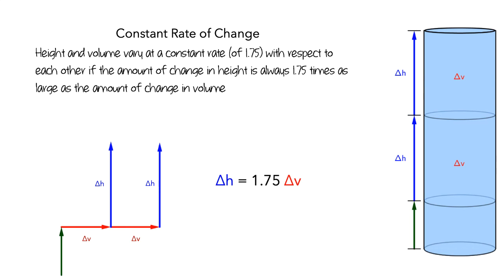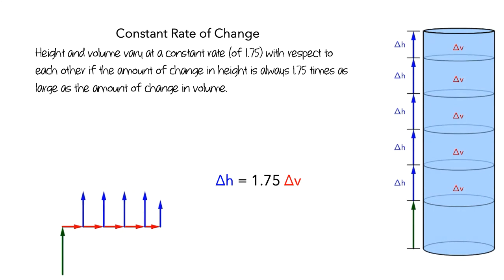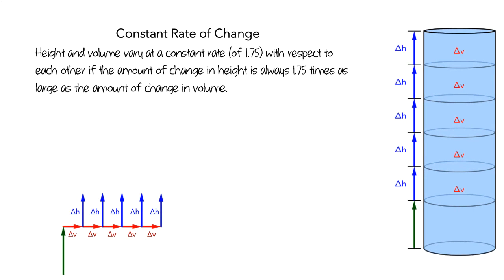What if we had used a different number of sections? Let's split the added volume into five sections. It's still the case that, for each of the five sections of change in volume, the amount of change in height is about 1.75 times as large as the amount of change in volume. This was true whether we split the added volume into two equal sections or five equal sections, and would be true for any way of splitting it into equal sections.